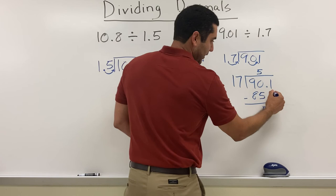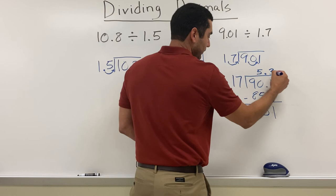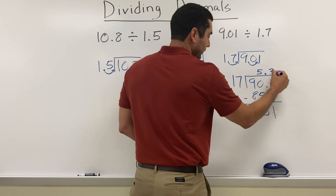So here, 17 I know it can't go into 5, so I'm going to bring down this 1. That means I'm going to put a decimal. And 17 goes into 51 exactly three times. 17 times 3 is 51. So my final answer is going to be 5.3.